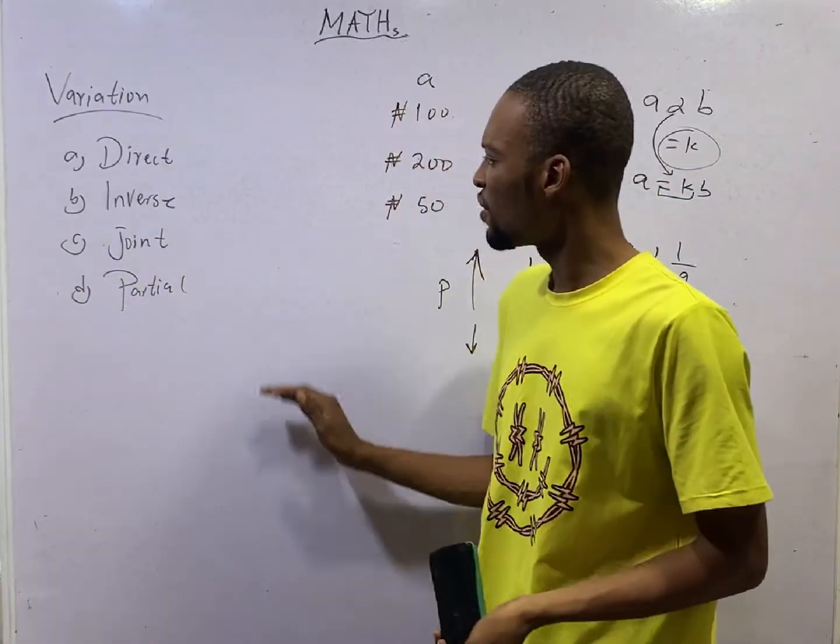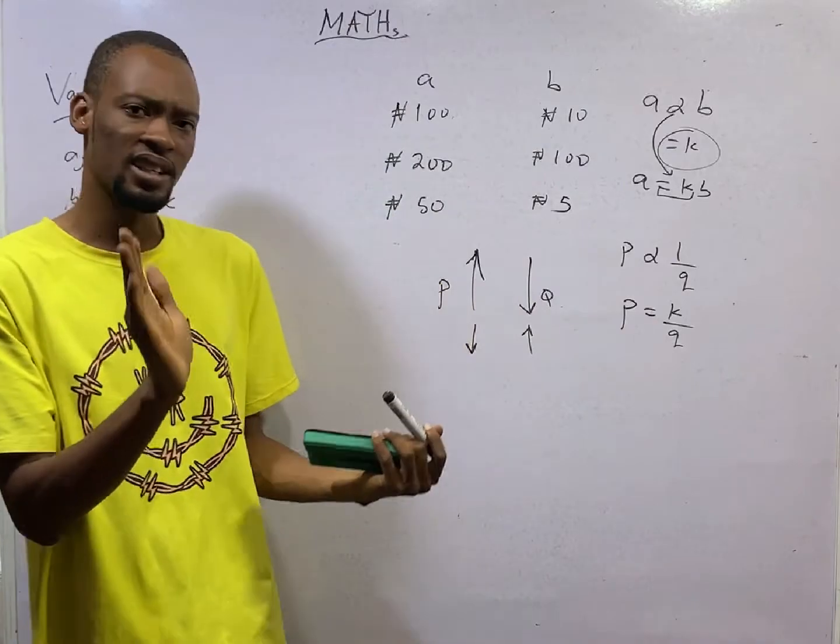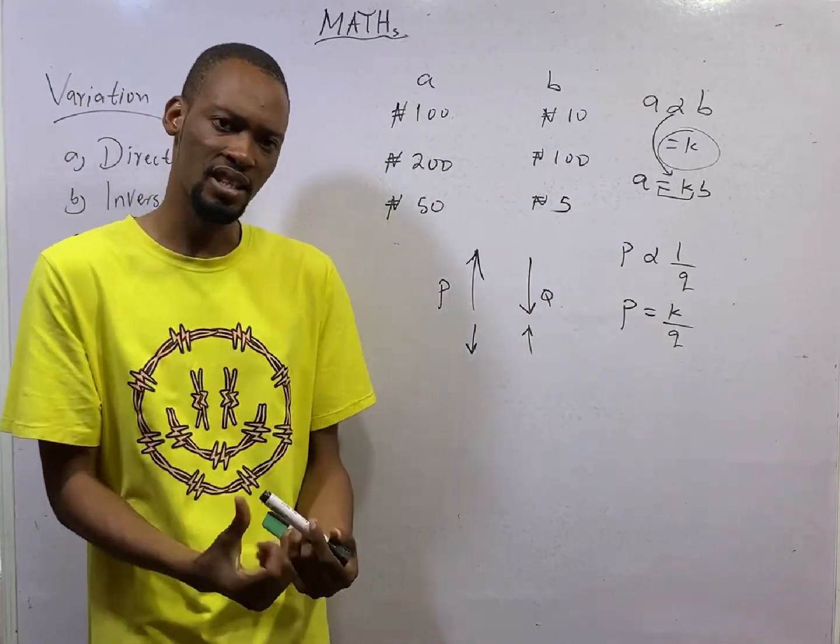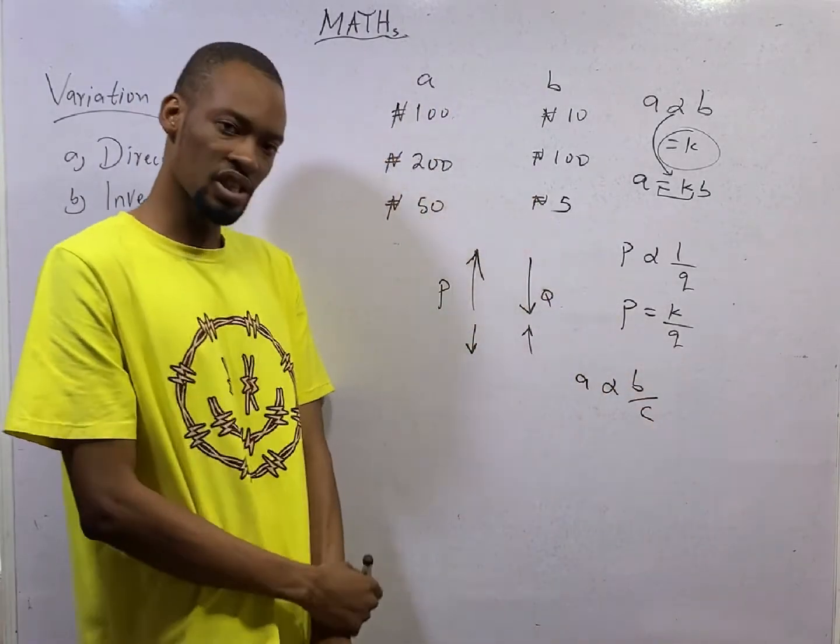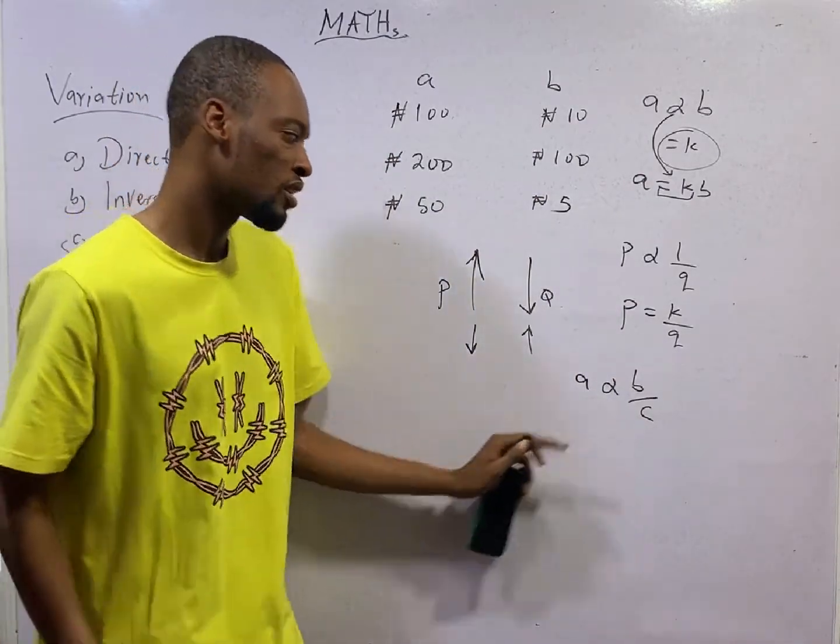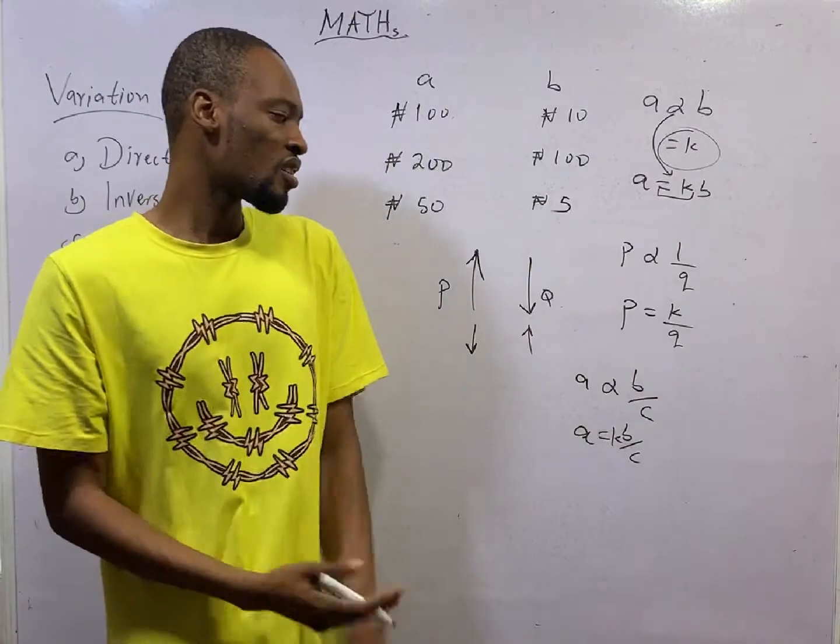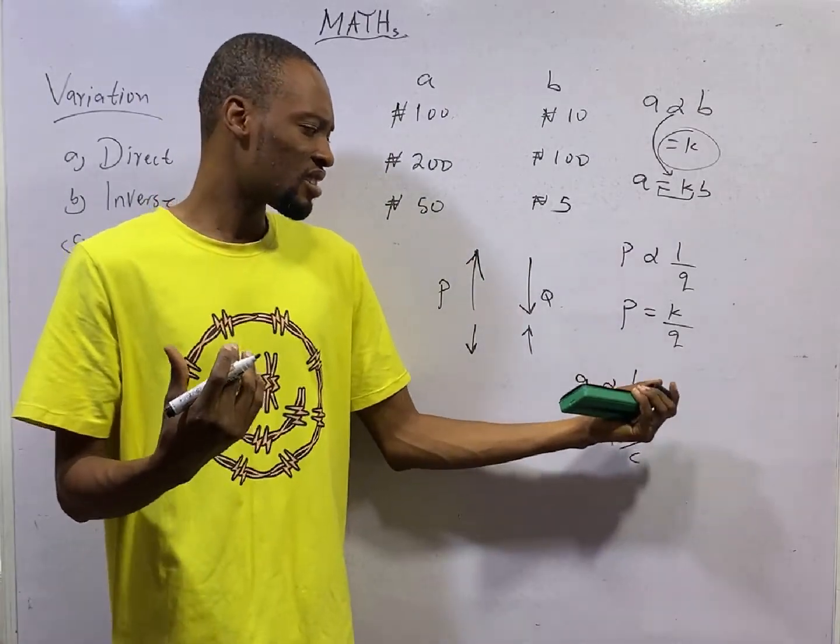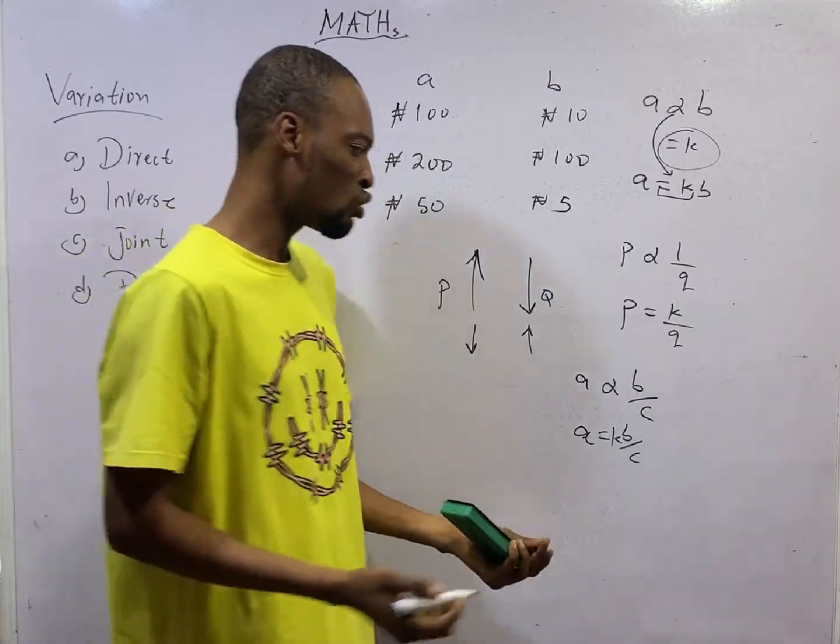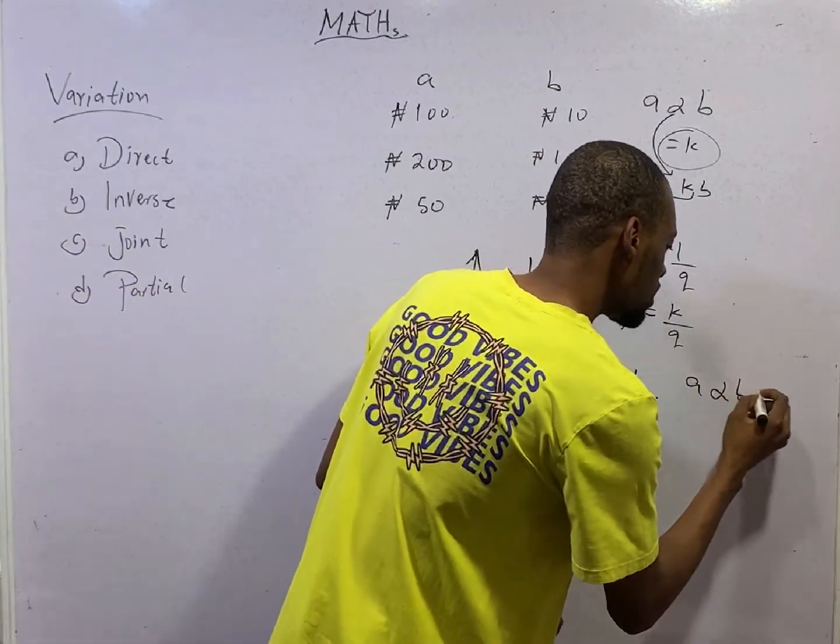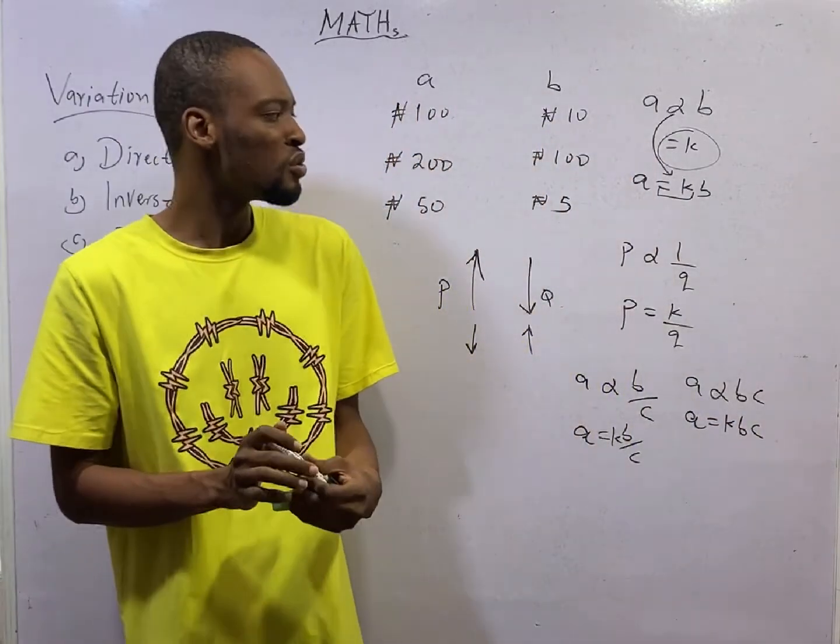For joint variation, it combines both direct and inverse variation. If I say A varies directly as B and inversely as C, this is how to represent it. To solve, we must change this to equal to. That gives us A equals KB over C. If I say A varies directly as B and C, it means A varies directly as B and also varies directly as C. That would be A is proportional to BC. A equals K, B and C. These are the various ways to represent variation.